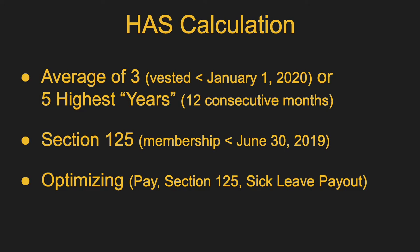Another important thing to keep in mind with your highest average salary calculation is Section 125 contributions from your paycheck. Section 125 includes things like paying health and dental insurance premiums pre-tax, contributing to a dependent care spending account for daycare, or a flexible spending account. If your membership with PERA was before June 30th, 2019, those all come out pre-PERA — not just pre-tax but pre-PERA contribution. So if you don't stop doing that during your HAS years, it'll lower your highest average salary, which will lower your PERA benefit in retirement. Most folks should stop doing Section 125 contributions pre-tax during their HAS years.